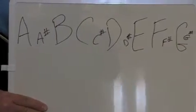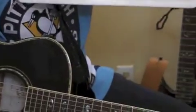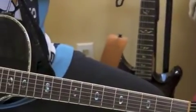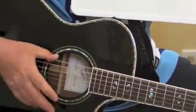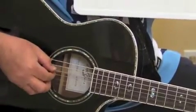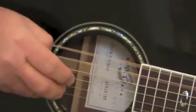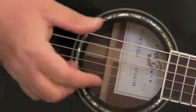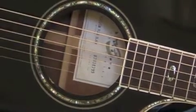The other part of the concept is to know the strings, and the strings are going to be your starting point. For right-handed players, the strings from your lap to your chin are: high E, B, G, D, A, and low E. Right away, because high E and low E are the same note, we've just taken six things to memorize down to five.